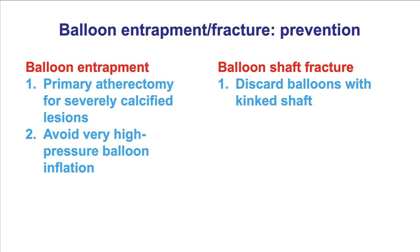How can we prevent balloon entrapment and fracture? By good preparation of the lesion. For example, if it's a very calcified and eccentric lesion, atherectomy might help prepare the vessel and minimize the risk of balloon entrapment. In terms of balloon rupture, avoiding very high pressure balloon inflations can reduce the risk of the balloon rupturing and potentially getting entrapped in the vessel.